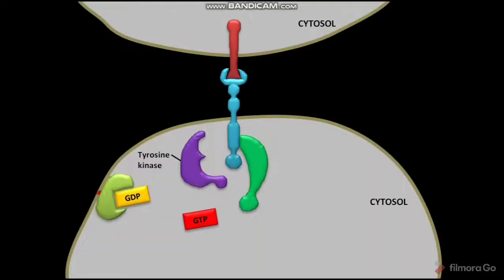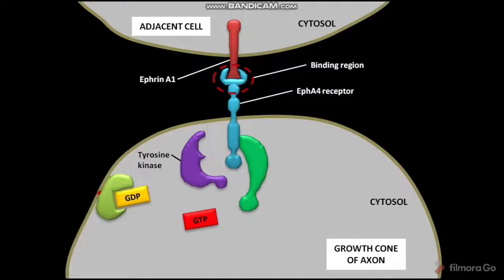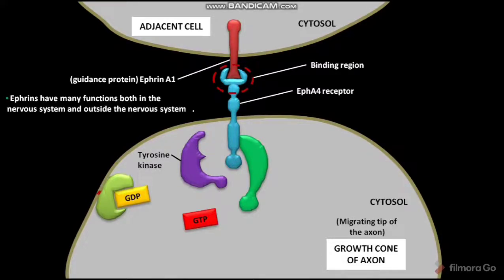The transmembrane protein Ephrin-A1, present on an adjacent cell, binds to the inactive EPH-A4 receptor on the growth cone. This is the binding region of Ephrin-A1 and the inactive EPH-A4 receptor. The growth cone is the migrating tip of the axon. Ephrin-A1 is a guidance protein. Ephrins have many functions both in and outside the nervous system. A protein called Afaxin is stably associated with the cytosolic tail of the EPH-A4 receptor.